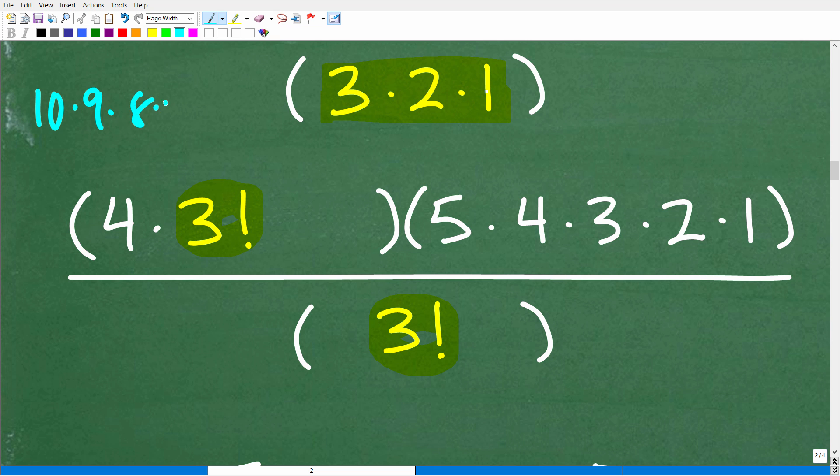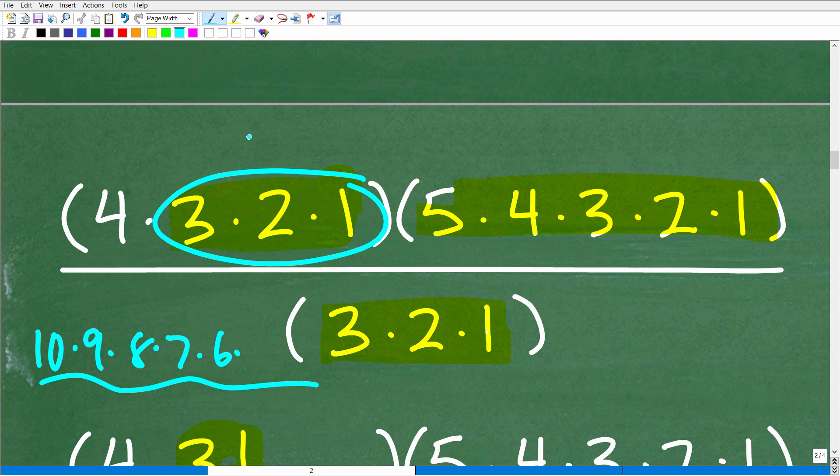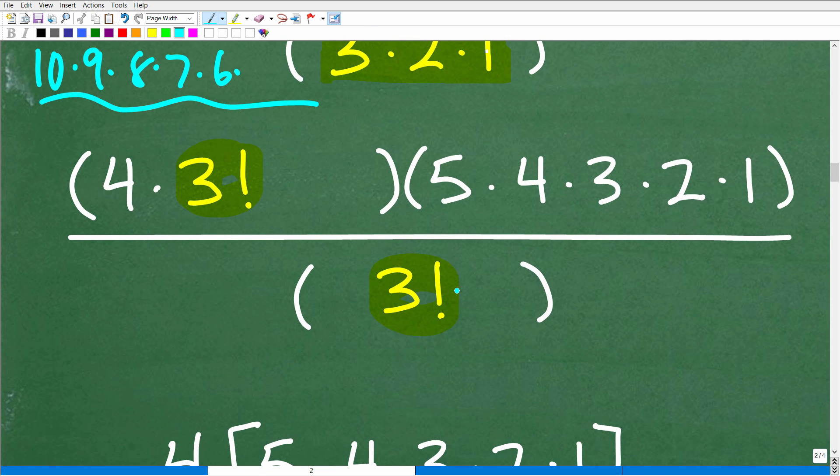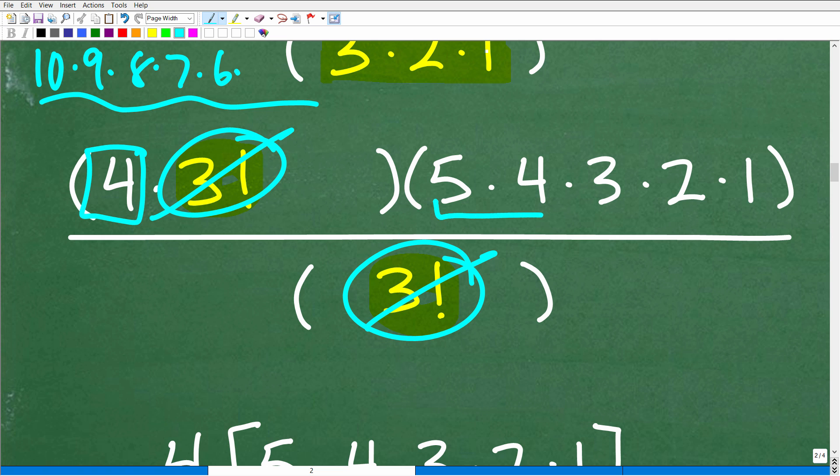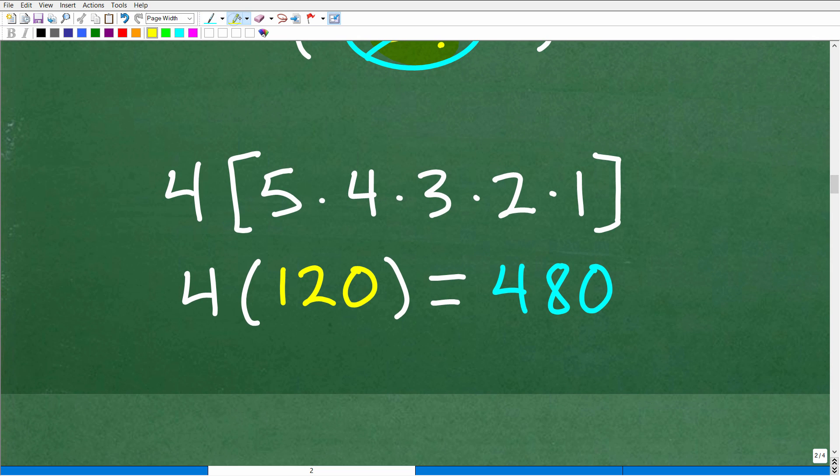If you have like 10 factorial, that's a big number, right? That's 10 times nine times eight times seven times six, and you don't want to write all these numbers out. You want to look for opportunities. Four factorial is four times three times two times one. Well, let's just not write all this out. Let's just call that three factorial. So hopefully you understand what I'm talking about. Here I have three factorial, three factorial. I can cross cancel. That leaves you with four times this, which is five factorial. So now let's do the number crunching. We have five times four times three times two times one. That's 120. So four times 120 is 480.